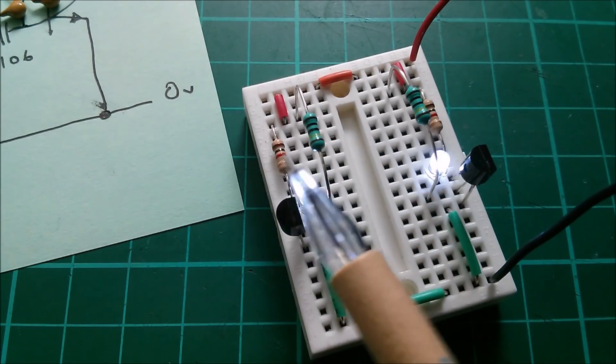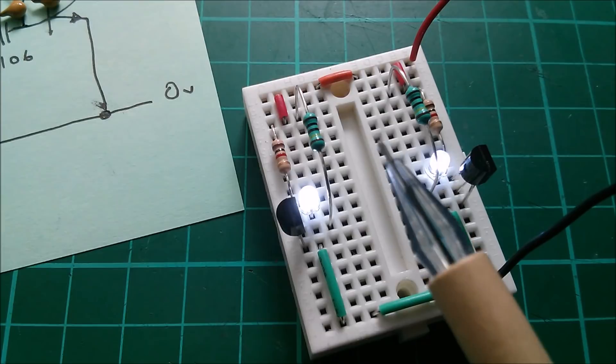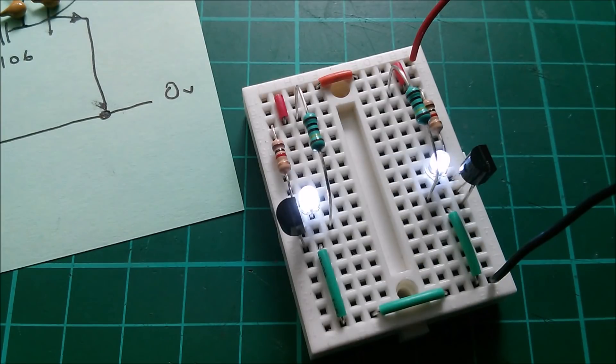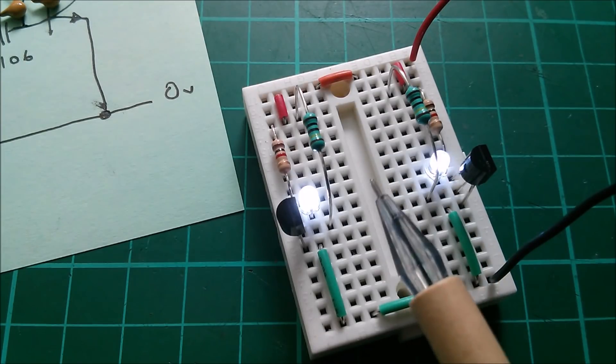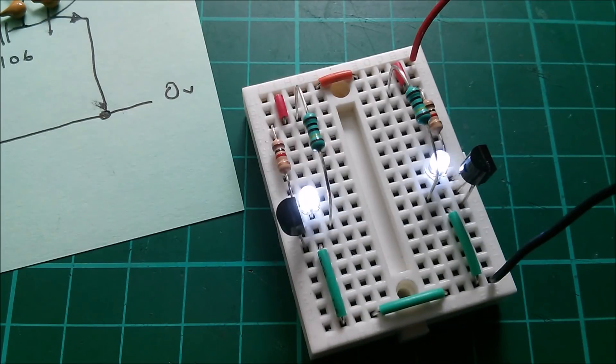Now I could lower the value of these 1k resistors to 470 ohms or something, but then that breaks my E1 series component values. So what else can I do to get more gain from these transistors? Darlingtons!